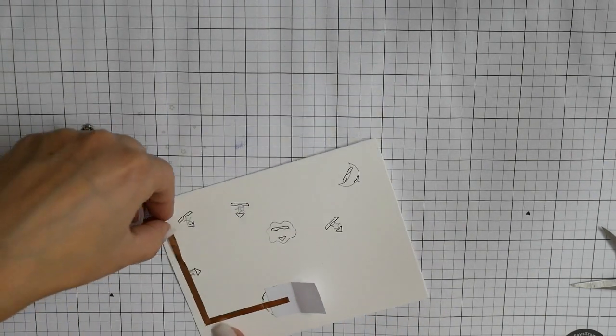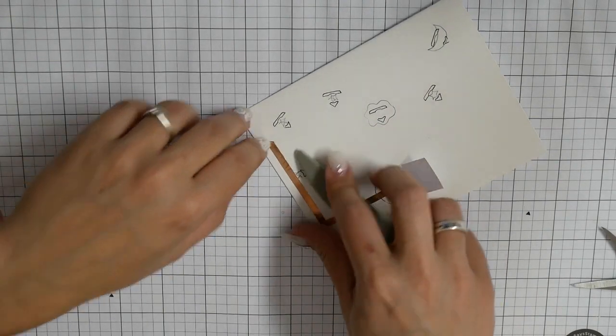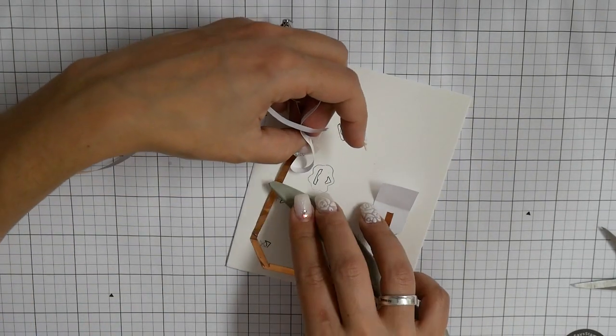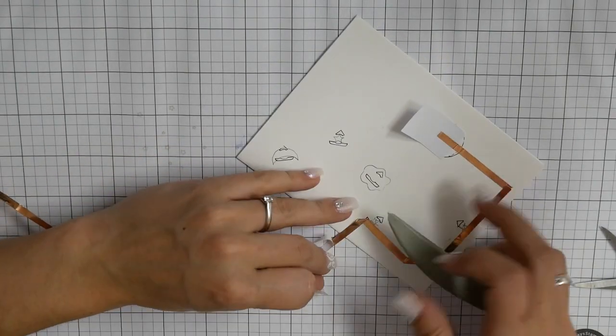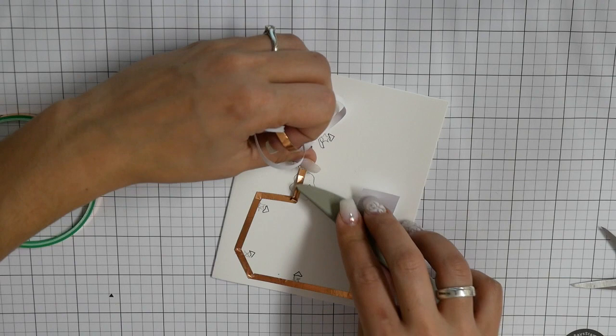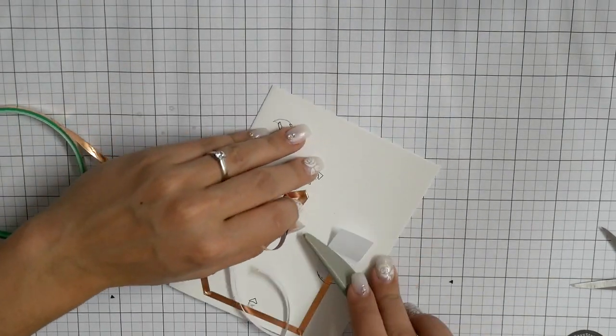I am taping down my copper tape, and I am using my bone folder. To create the edges, I always like to bend my copper tape back and then forward, and then I get easy and clean edges.